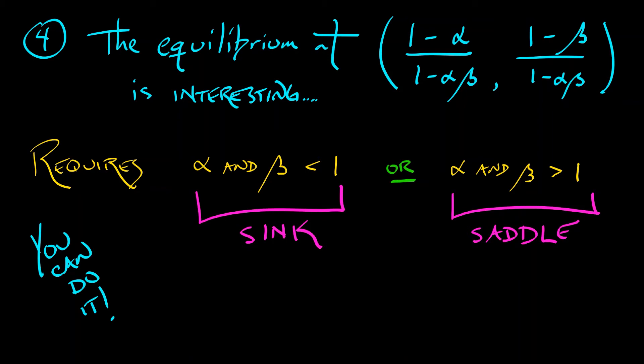What I want to focus on is what these mean. In the case where alpha and beta are less than 1, where you have a sink, both population sizes are positive. This is a cooperative equilibrium. This is peace. This is two companies carving out a space in the market where they both have market share.